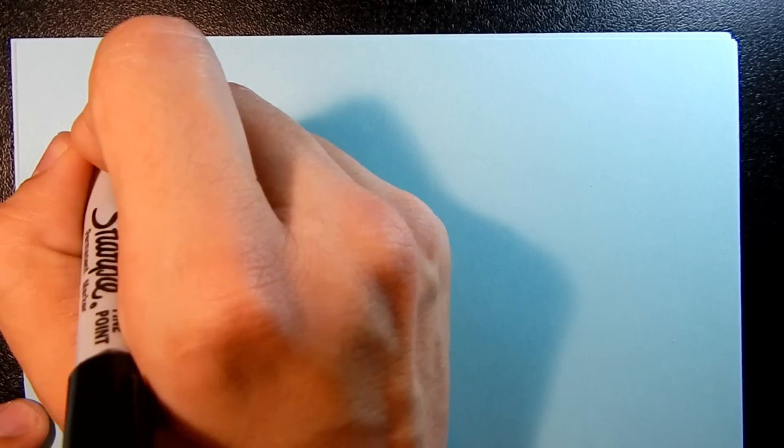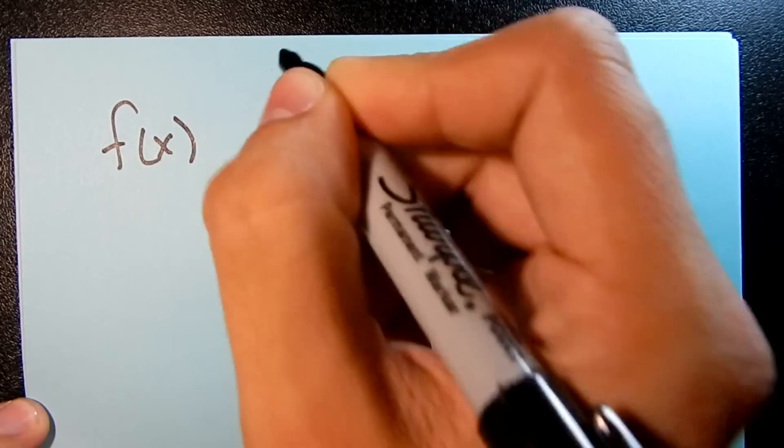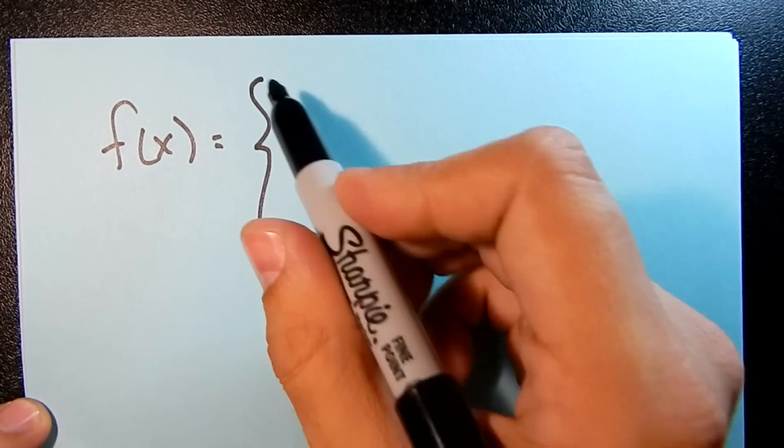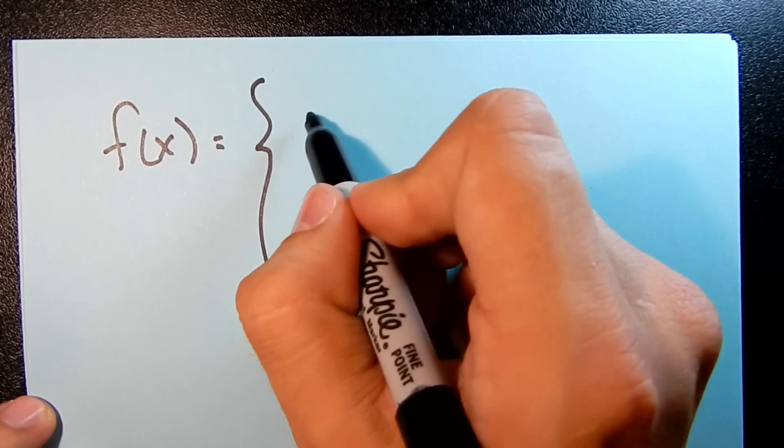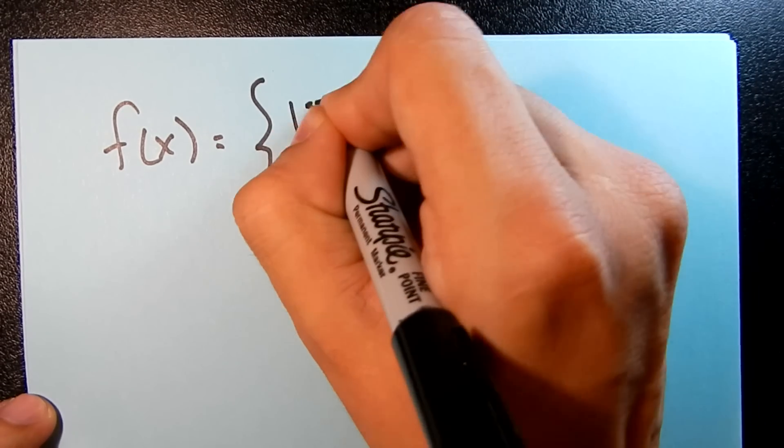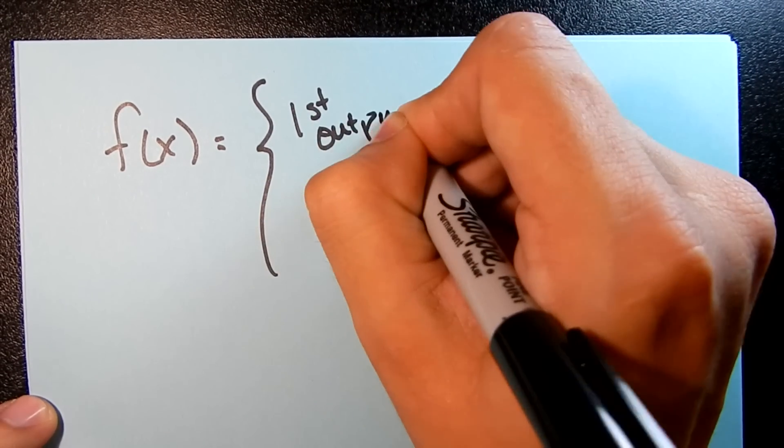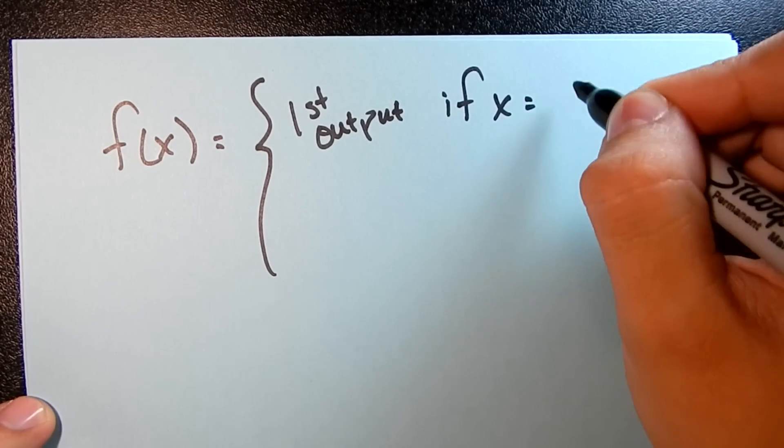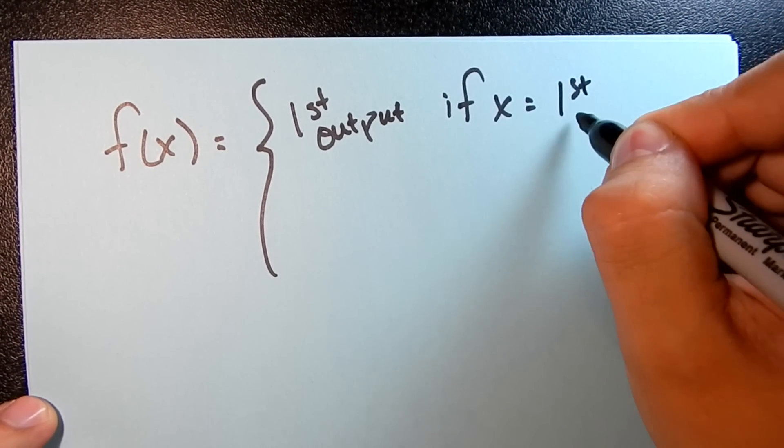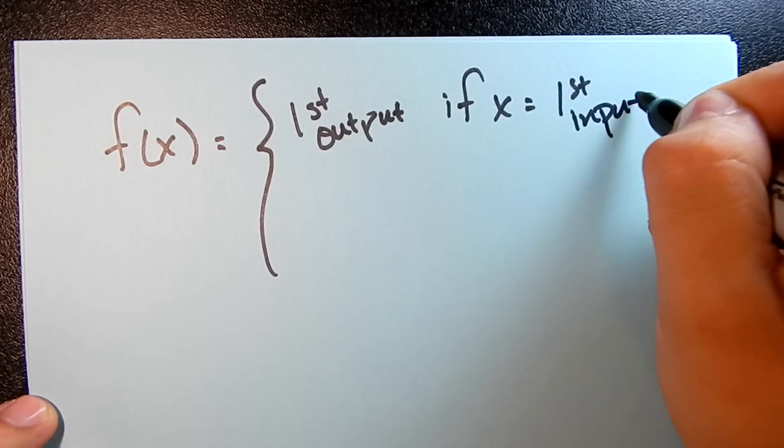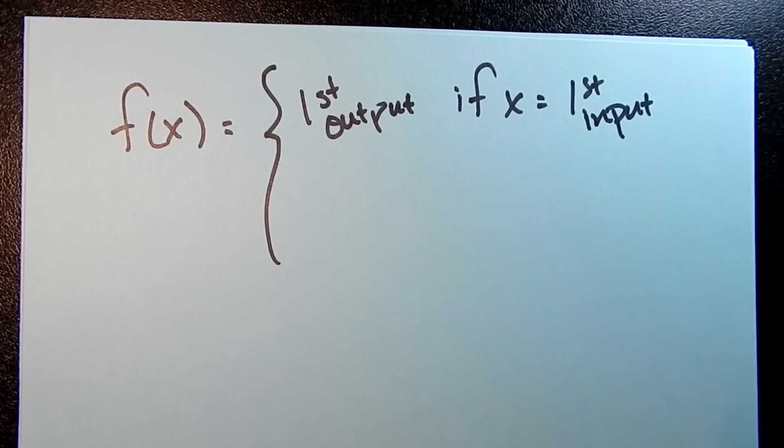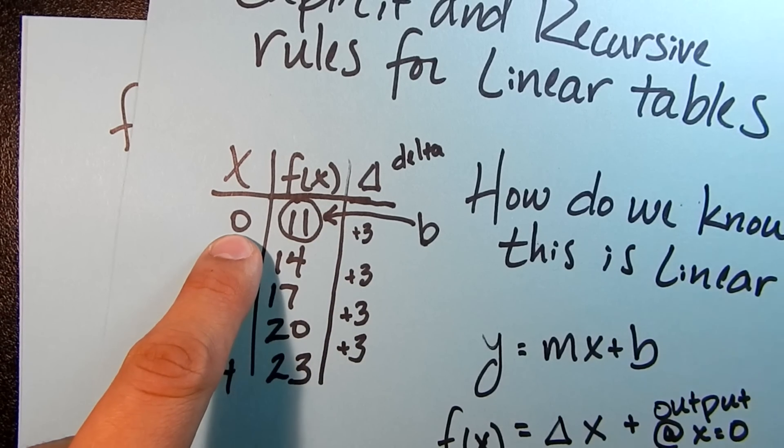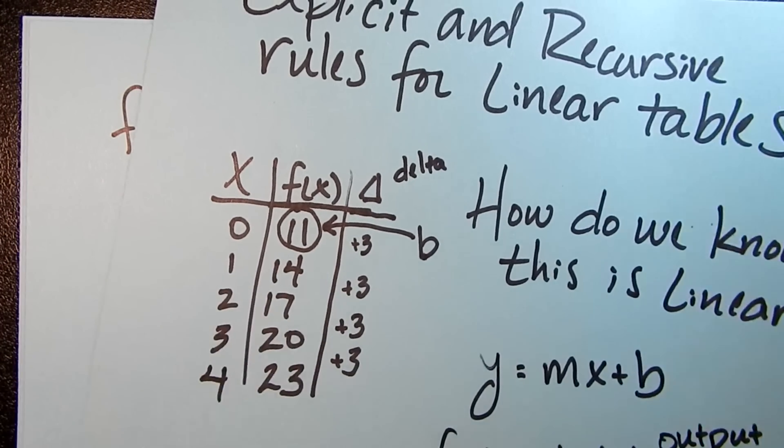So the general form here is going to be f(x) is equal to, and you sort of have this curly brace thing. Here, we're going to say the first output. If x is equal to, and then in this case, it's the first input. So in our table, we have the first output is 11. The first input is x, or is 0. x is 0 in this case.